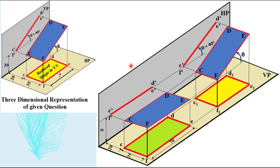Following the procedure, step one says: neglect the given angle theta. If we neglect theta, the plane CDEF becomes parallel to HP, and using this we can draw the true shape as our first view. The true shape dimensions are already given — length 70 mm and breadth 35 mm. This is our first view of the solution.